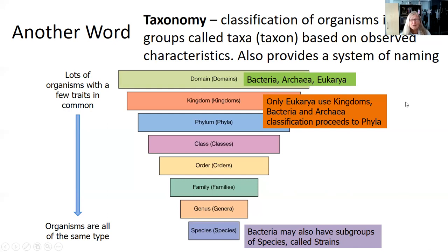Bacteria and Archaea are both prokaryotic cells—domains consisting of unicellular organisms with no nucleus. Because of that, when you go through their taxonomy, Bacteria and Archaea skip the kingdoms and go right to phyla. It's only within the Eukarya domain that kingdoms are applicable: plants, animals, fungi, and protists.